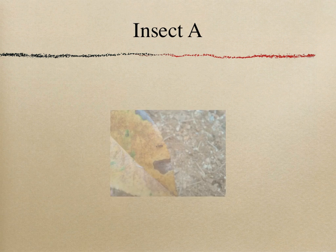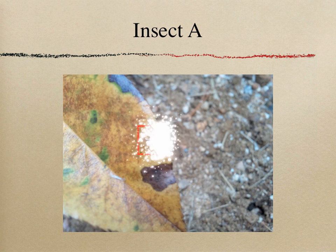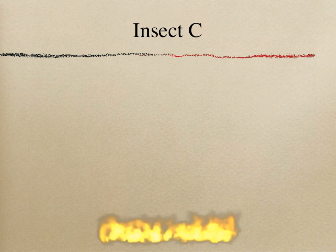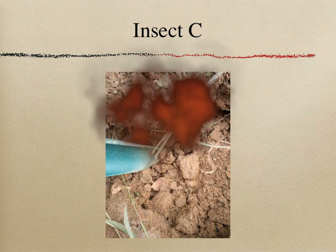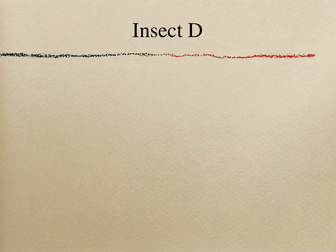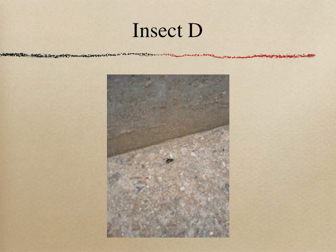Insect A is ants — they are easily found in both locations. Insect B tends to hide under soil. Insect C has the same color as the soil so it is not easily detectable in the picture, but you can find a small insect inside the red box that I drew. Lastly, insect D is a small black insect that moves very quickly.